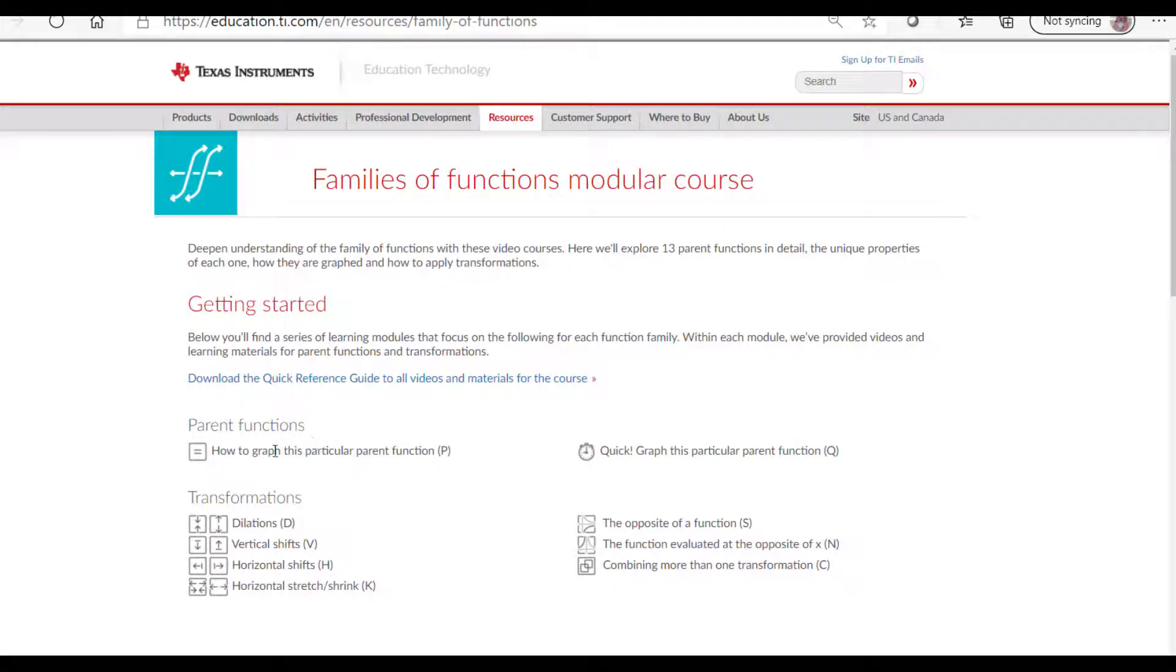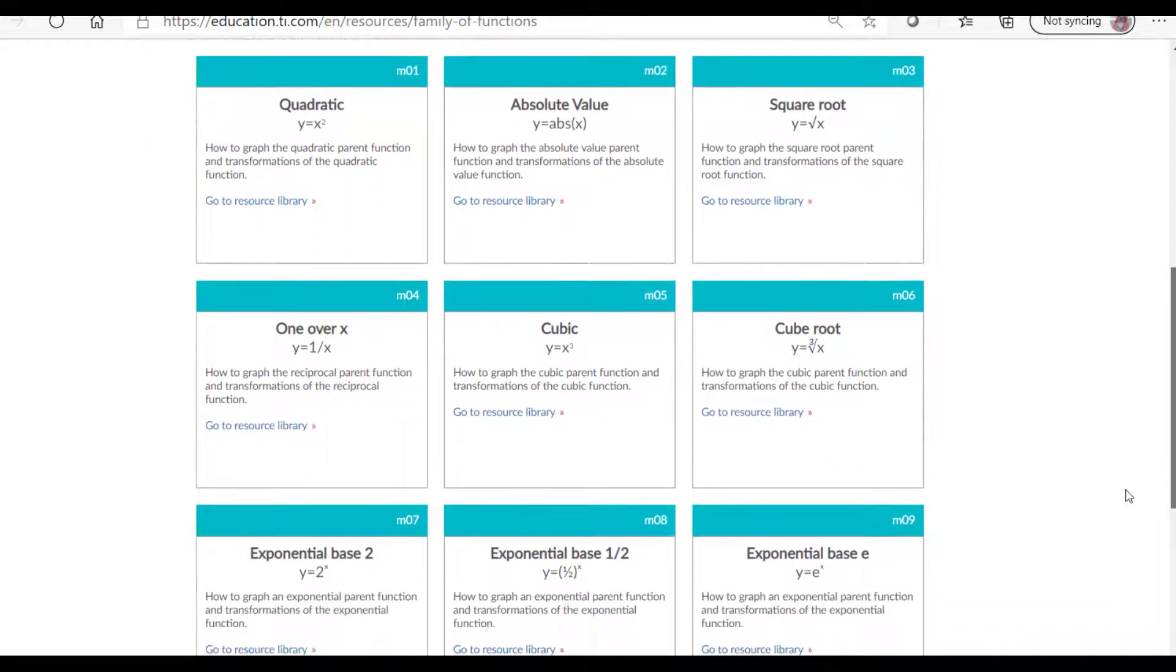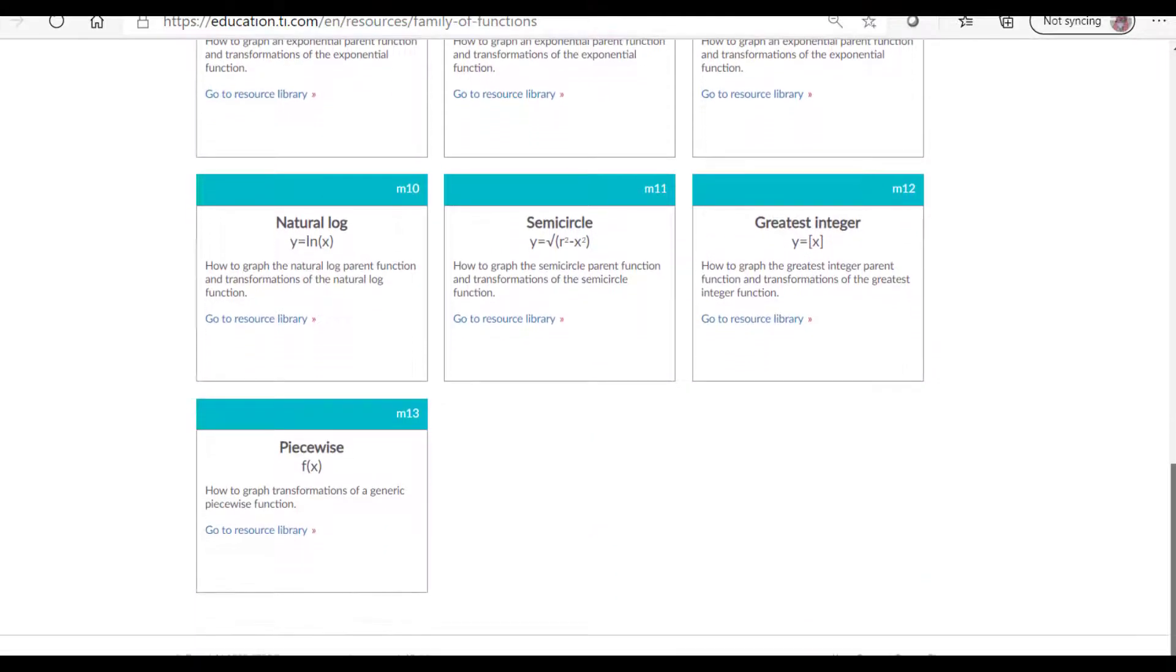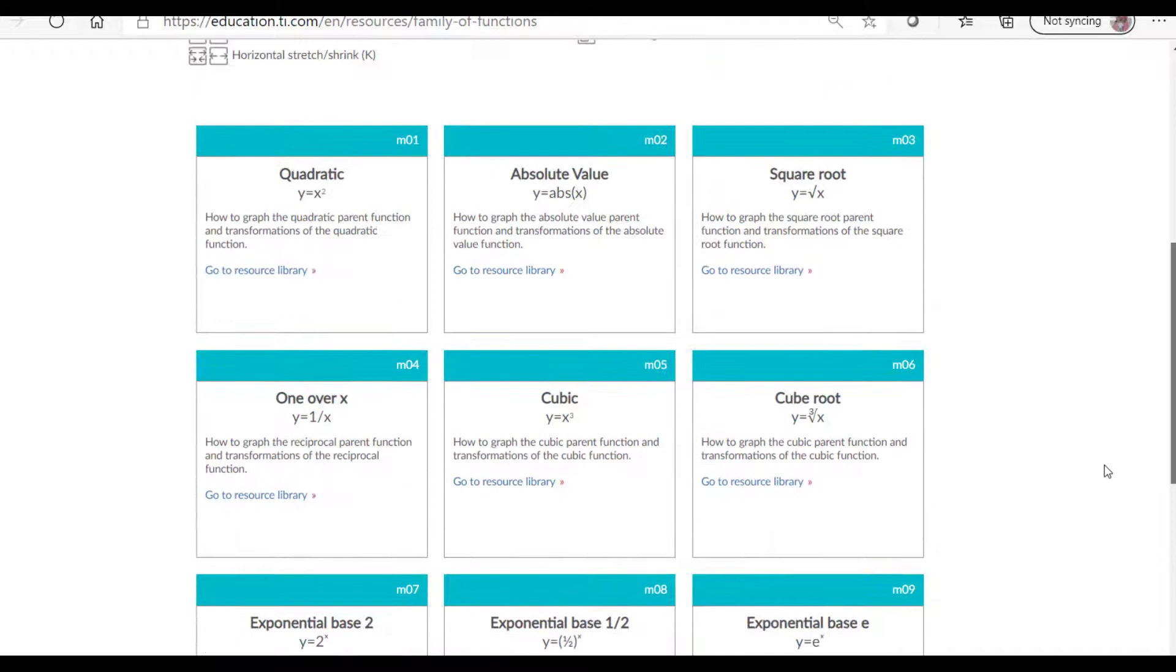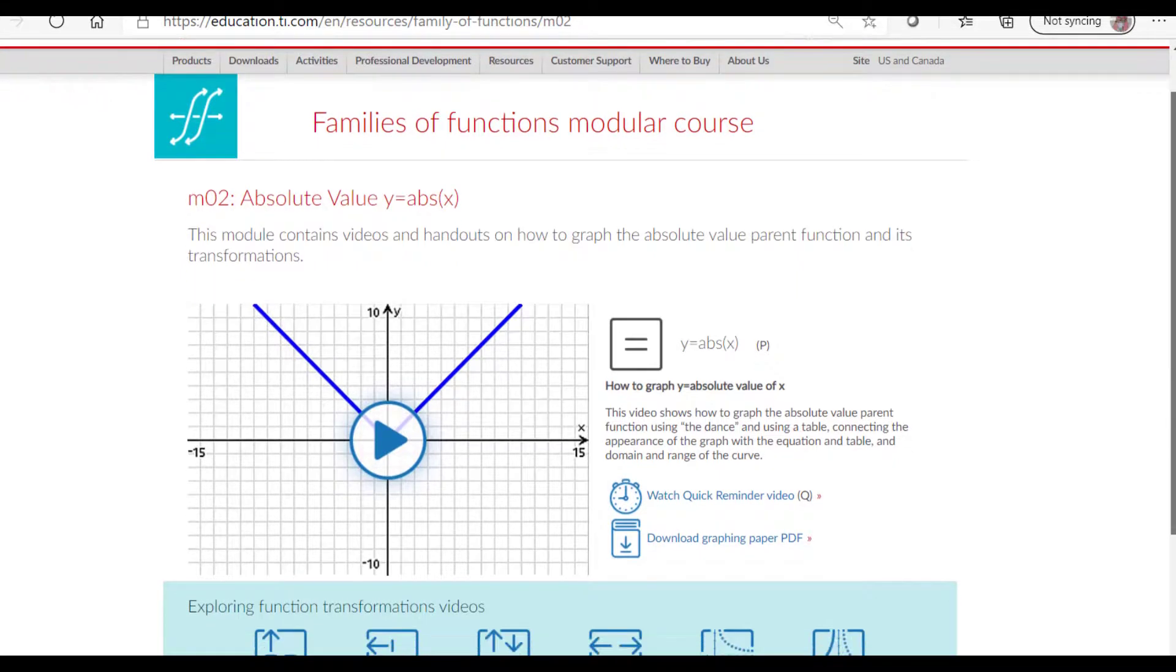The parent function, the quick one, the transformations. And then below that are the 13 modules for the 13 parent functions. Again, press pause if you need to if I'm going too quickly. Click on any one of the modules like absolute value, and it will take you to that page.